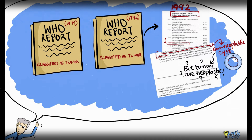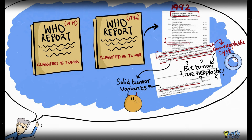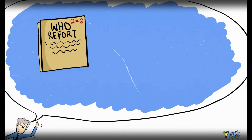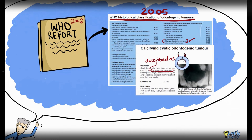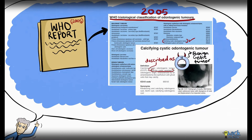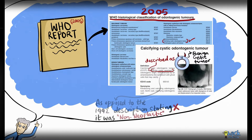However, the 1992 report went on to state that the terms dentinogenic ghost cell tumor or odontogenic ghost cell tumor could be proposed for certain variants of Calcifying Odontogenic Cyst showing a solid growth with ameloblastomatous lining, ghost cells, and dentinoid. Later, in the 2005 WHO report, this lesion was described as a benign cystic tumor or a cystic neoplastic lesion — meaning that though cystic, its nature was that of a benign neoplastic tumor, and the consensus report did not consider it to be a non-neoplastic cyst.